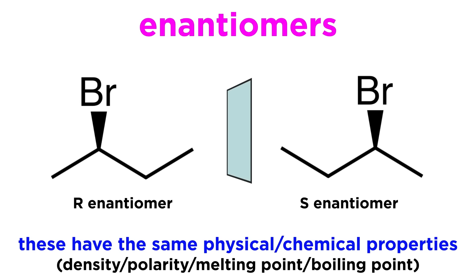Let's investigate. Given that enantiomers are precise mirror images, they have nearly identical physical properties. They have exactly the same density, polarity, melting point, and boiling point.